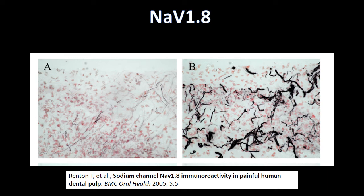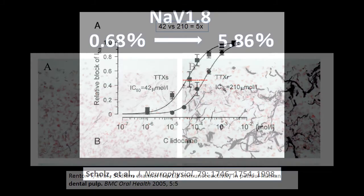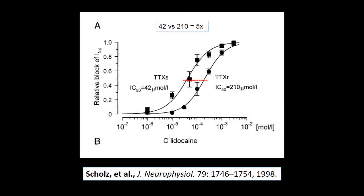この2つの図はナトリウムチャンネルボルテージ1.8の量を比較したものです。左側が正常な歯髄、右側は非可逆性歯髄炎を起こしている歯髄です。黒く染まっている部分がナトリウムチャンネルボルテージ1.8を発現している部分であり、その量はおよそ8倍にも増えています。